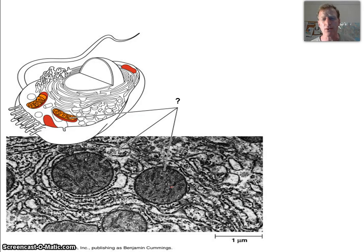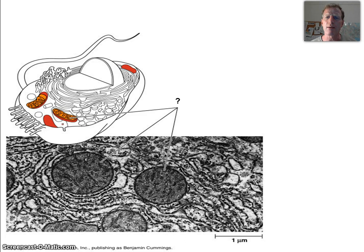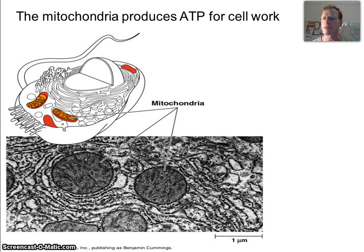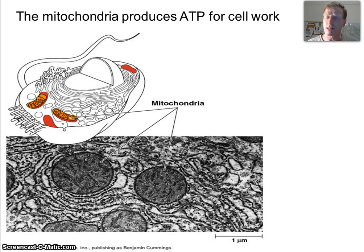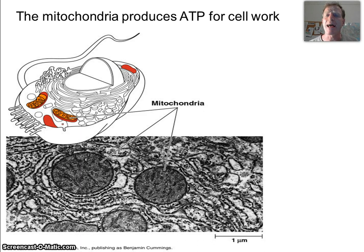Where is ATP made? Going back to our cell diagram — do you recognize these kidney-shaped structures with the inner fold? That's the mitochondria, the powerhouse of the cell, because it powers all cell activities. It takes food, burns that food, and makes the energy currency ATP — the energy used within all cells and all cell processes. This has been a quick review of energy and energy transformations. In the next screencast, we'll talk about the steps involved in cell respiration and how it actually makes ATP from food.